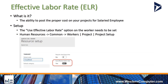So what is effective labor rate? It's the ability to post the proper cost on your projects for salaried employees. AX and D365 have the ability to assign an hourly cost price to your workers. Not everyone who works for you is an hourly employee — you can have salaried people who charge your projects. For an hourly employee, an hourly cost price works out great; they charge that same cost price to your project regardless of how many hours they work because that's how they get paid.